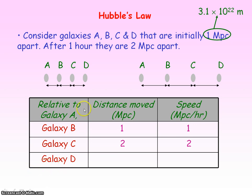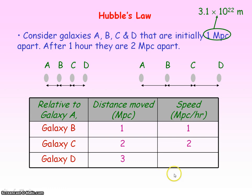Finally, galaxy D, relative to galaxy A, was initially three megaparsecs away, but an hour later is now six megaparsecs away. So it has travelled a distance of three megaparsecs in that hour, and so has a speed of three megaparsecs per hour.